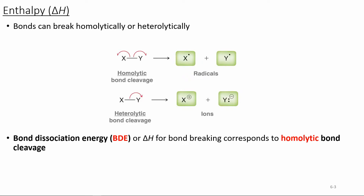There are two different ways that we can break a bond. In homolytic bond cleavage, if we have two atoms X and Y, we have the electrons that are shared between those two atoms in the bond. Those electrons are going to be split between the two different atoms, so we'll end up with two atoms each with one electron, or radicals. In a heterolytic bond cleavage, we're going to have both electrons moving to one atom, and that will form a pair of ions.